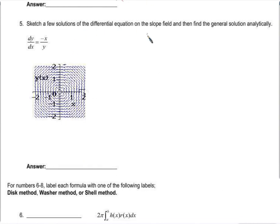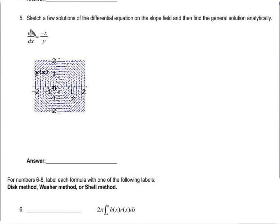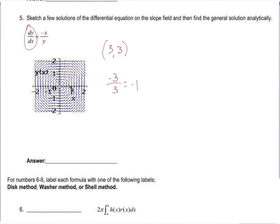Let's sketch a few solutions of the differential equation. dy/dx — the derivative of y with respect to x — tells us the slope. If I pick any point, say 3 comma 3, this differential equation with those x and y values should tell me the slope. Putting in 3 for x and 3 for y: negative 3 over 3 is negative 1, so at that point the slope is negative 1.